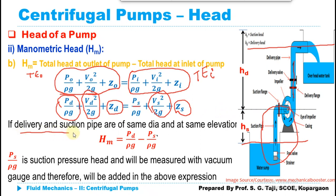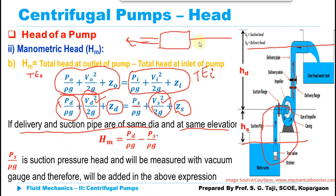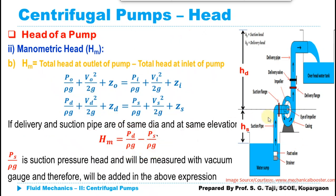If the delivery and suction pipes are of the same diameter, then VD squared upon 2G and VS squared upon 2G cancel each other. And if both are at the same elevation — for example in a horizontal pump arrangement with a suction pipe and delivery pipe at the same level — the manometric head reduces to PD upon rho G minus PS upon rho G. Since the suction head is measured by a vacuum gauge and is negative, the negative-negative becomes positive, so the manometric head is the pressure head in the delivery pipe plus the suction head.